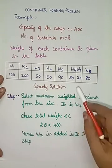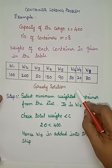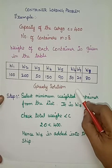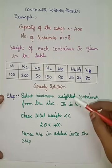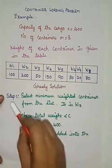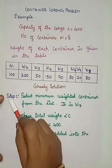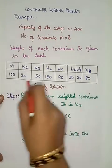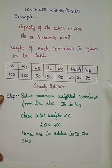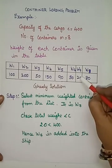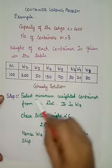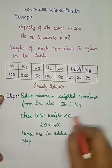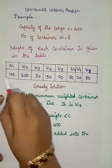As mentioned in the previous video, we are going to start loading from the least weight container. So I'm going to select the least weight among these eight weights. The minimum weighted container is 20, which is w7.